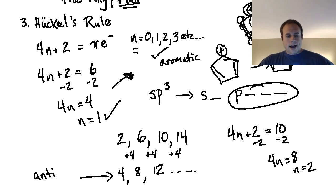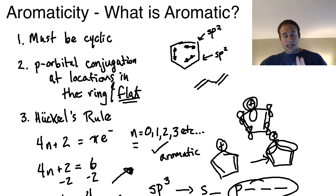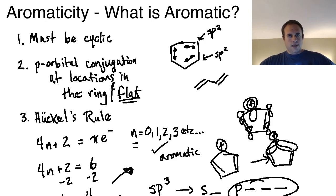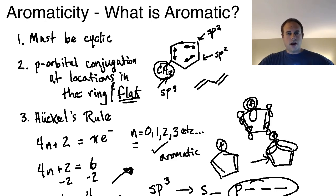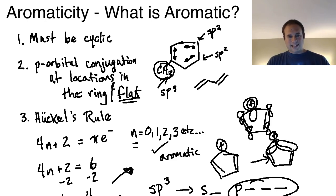Those are the three rules: the compound must be cyclic, must have complete p orbital conjugation around the ring, and must obey Hückel's rule. An important note: substituents outside the aromatic ring don't affect aromaticity. For example, a CH3 group attached to benzene is sp3, but that doesn't ruin aromaticity because it's not part of the ring system. It's only what's enclosed within the cyclic system that must meet the perfect conjugation requirement.